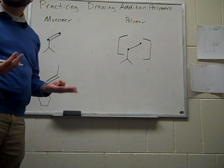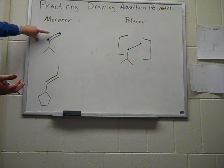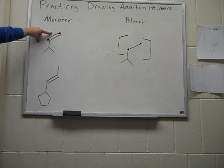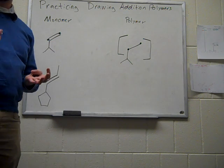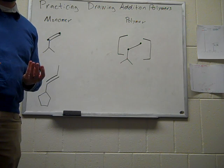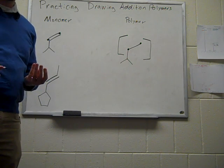In a polymer, especially an addition polymer, what winds up happening is that our pi bond of our alkene is what's used to make bonds to the next bonding unit, to the next monomer in the polymer sequence.